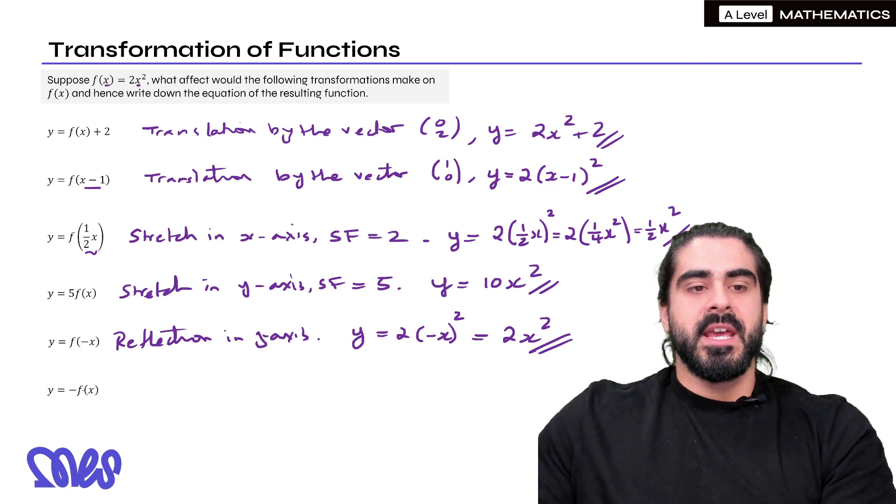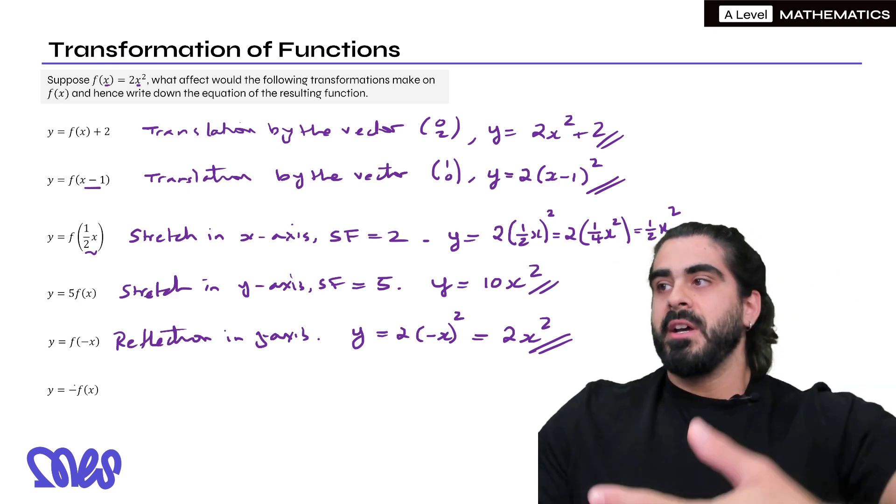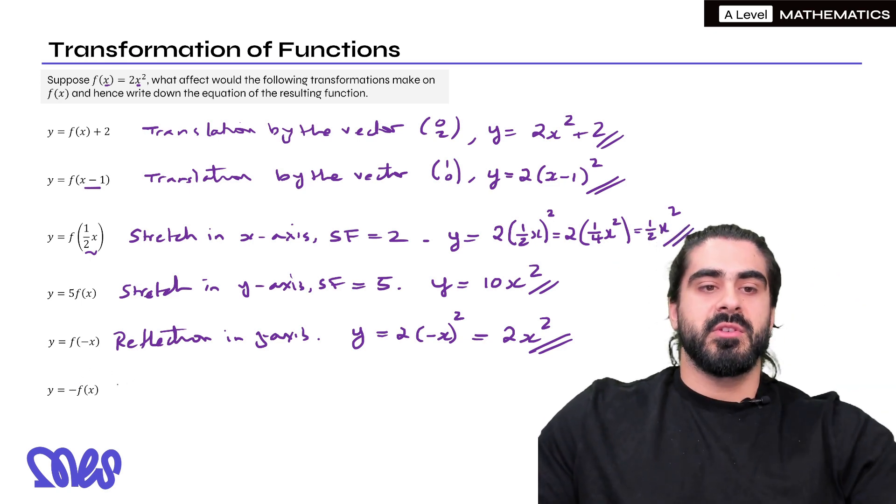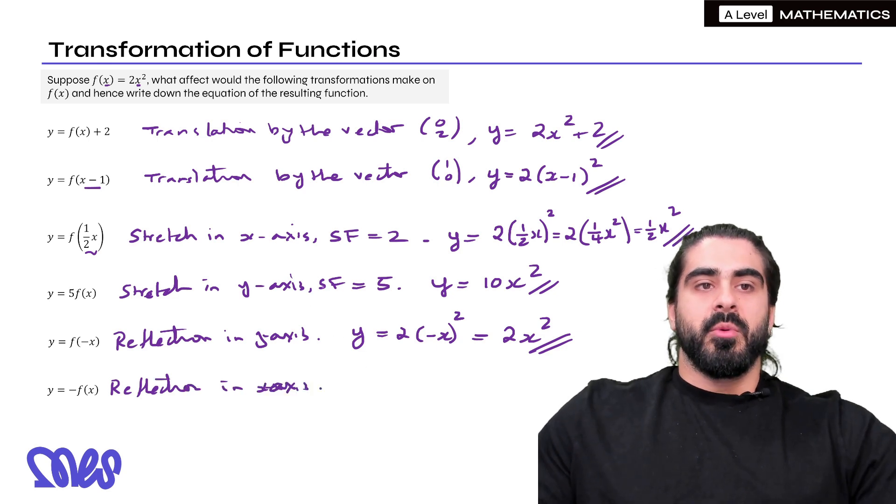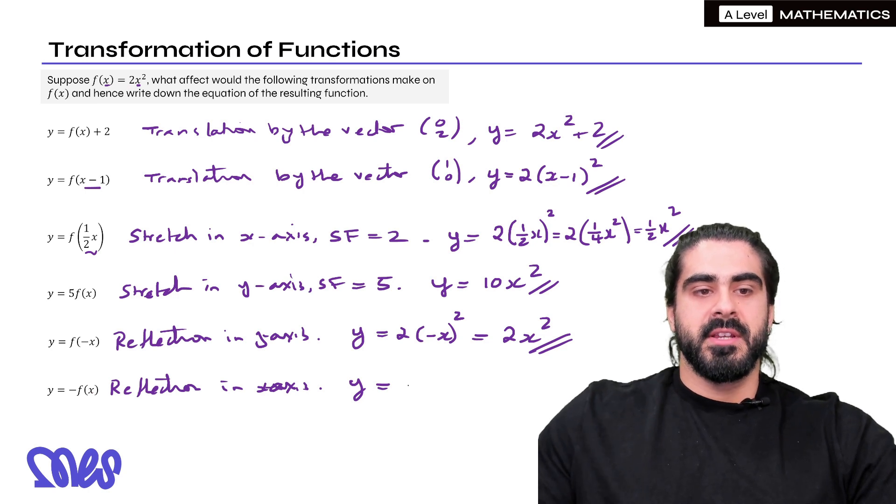The final one, negative f(x) is timesing all the y values by minus 1. So any positive y value becomes negative. So it's a reflection in the x-axis. Now what would this equation be then? Well if f(x) is 2x², negative f(x) will be -2x².